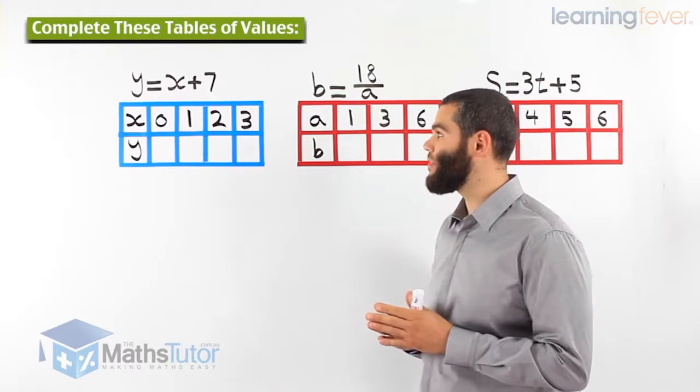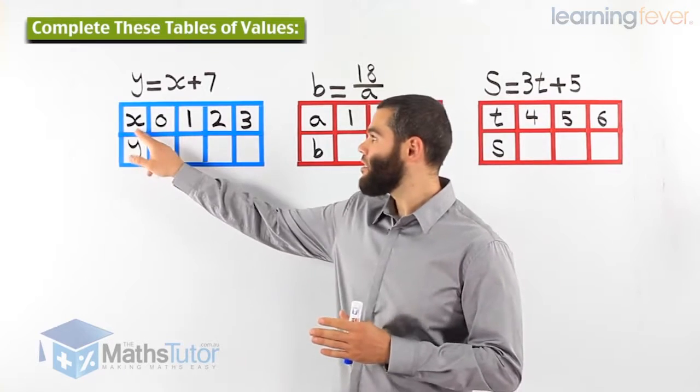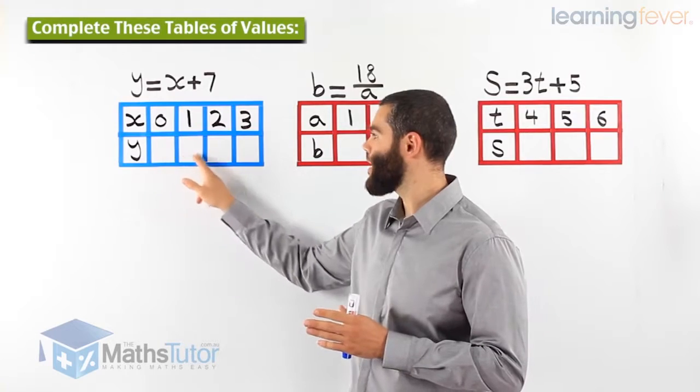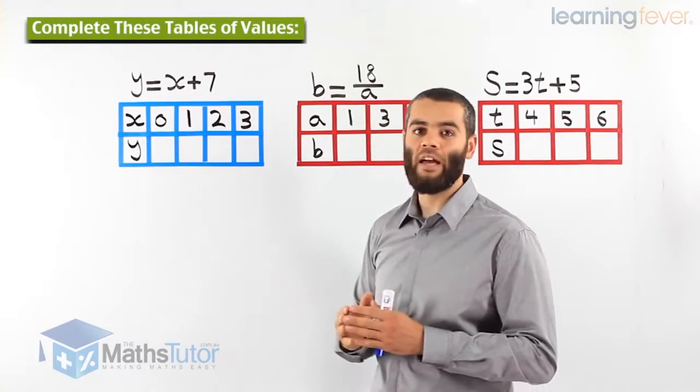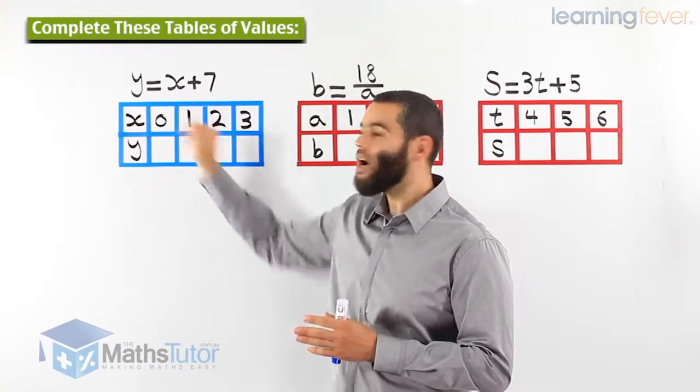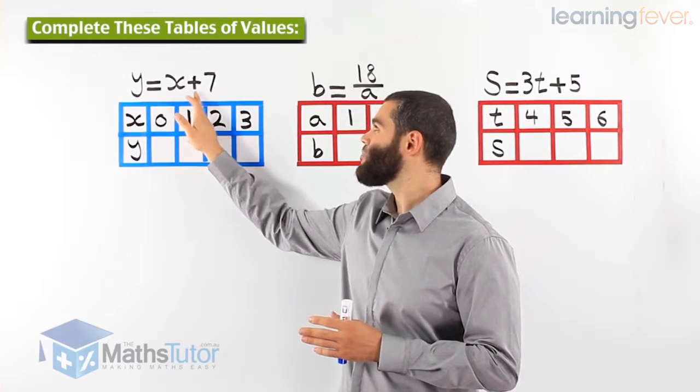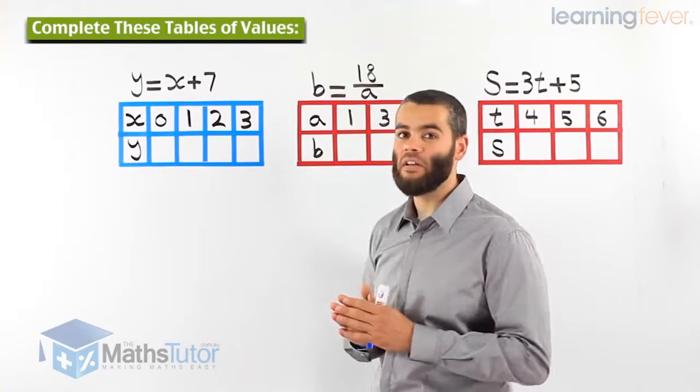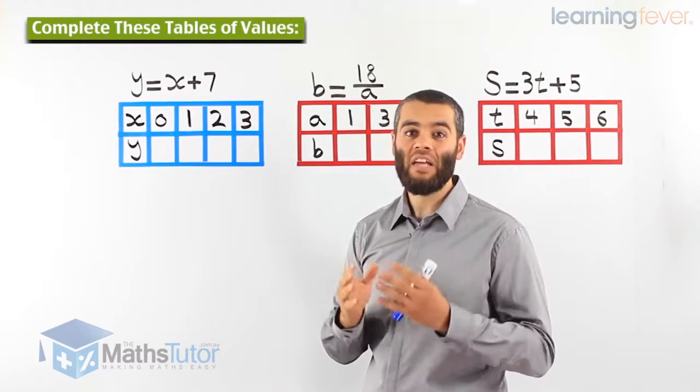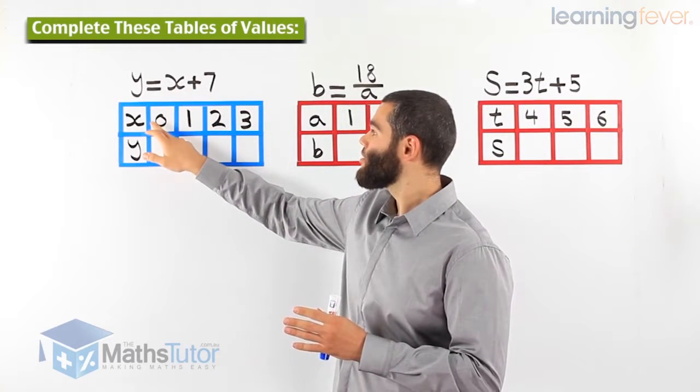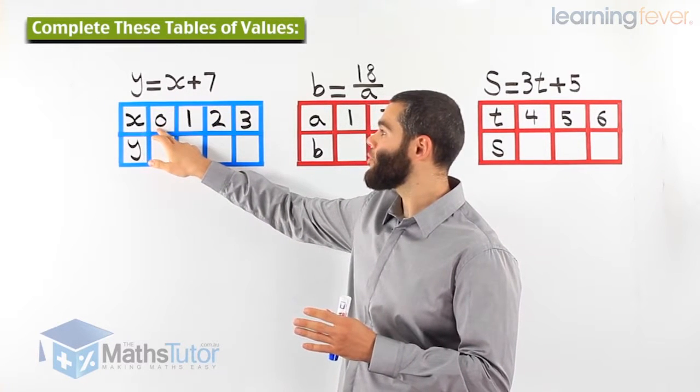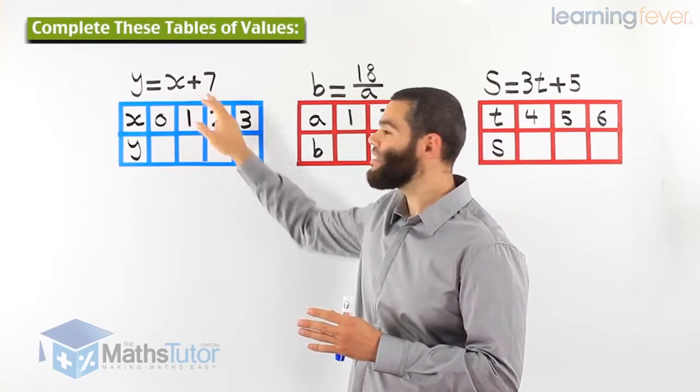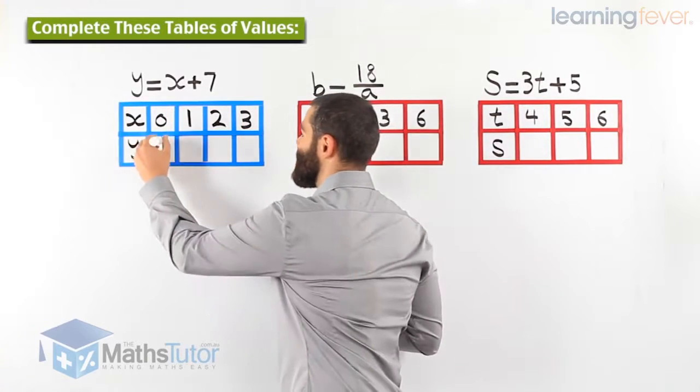Here we have this first table of values with an x row and a y row. Let's see how we're going to complete the table of values using the rule we have been given. The rule says that y equals x plus 7. We know that we've got to replace x with a number. For the first one, x is going to be replaced with 0, so 0 plus 7 and the answer is 7.